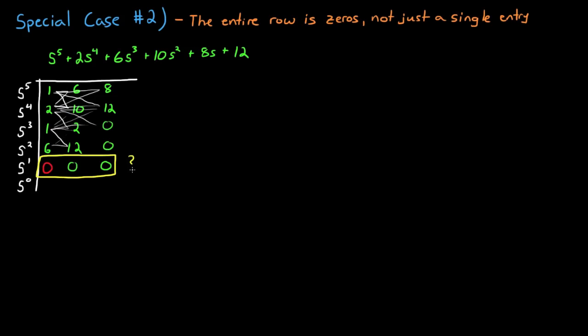Now before I explain how to continue filling out this table, I want to just address what this means, as there are only a few root locations that can cause a row in the Routh array to be all 0's.